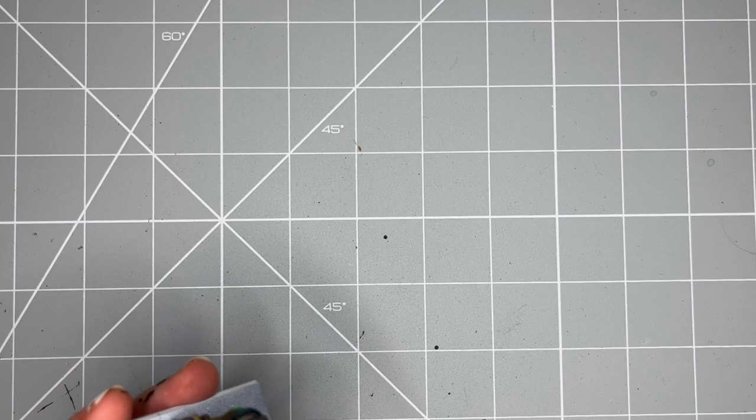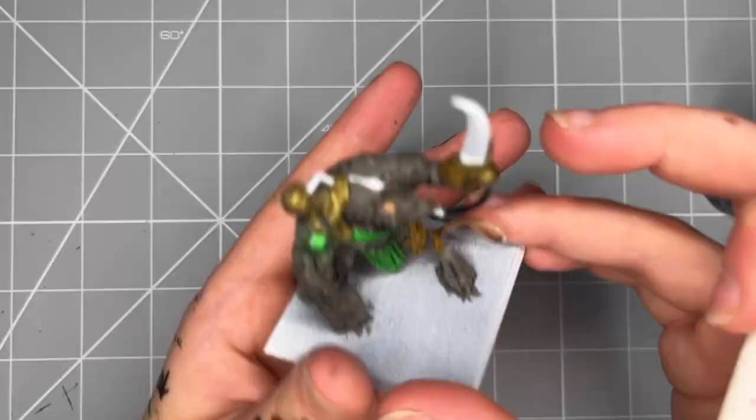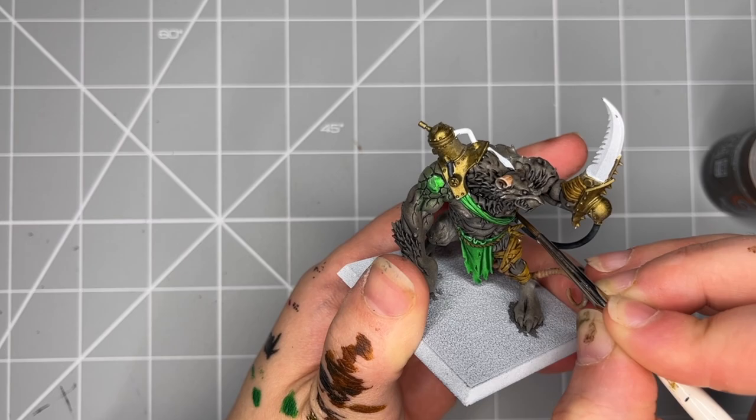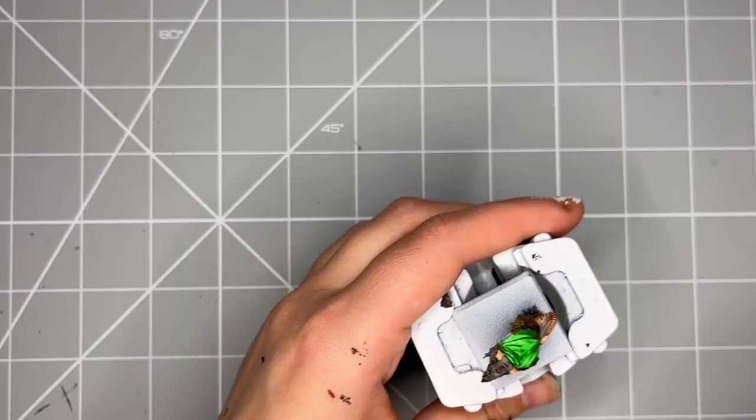Now this is a really honest point of the video. I missed quite a few areas. So this sped up part is me going backwards and forwards, between contrast paints, between the metallic, everything that we've done already and just tidying it up. It happens, it's normal, and it's okay.